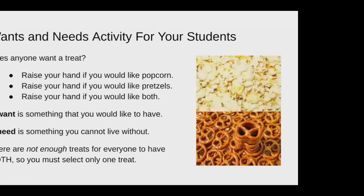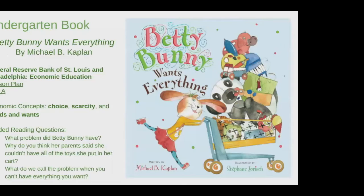Some guided reading questions you could use after reading with your students: What problem did Betty Bunny have? Even five-year-olds understand what a problem is. Why do you think her parents said she couldn't have all the toys she put in her cart? That teaches choice. What do we call the problem when you can't have everything you want? That is where scarcity and the fact that you have to make a choice comes in. If you are teaching the economic concepts of choice, scarcity, or needs and wants at any grade level, this book is a fantastic option.